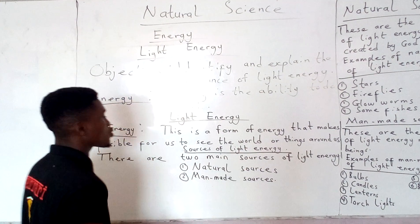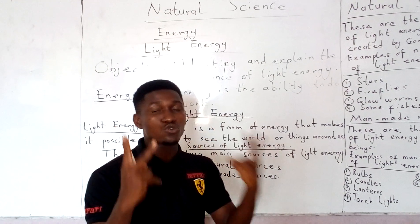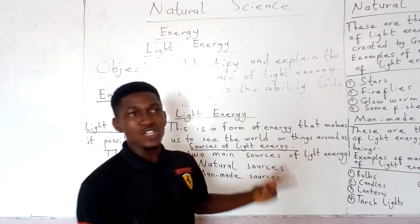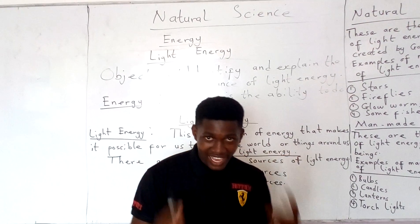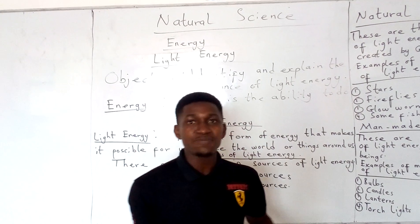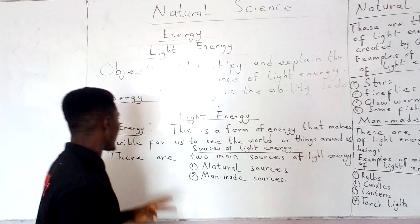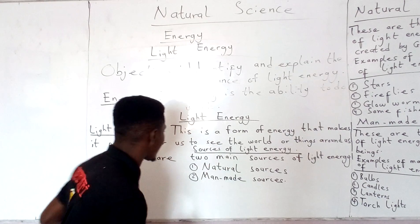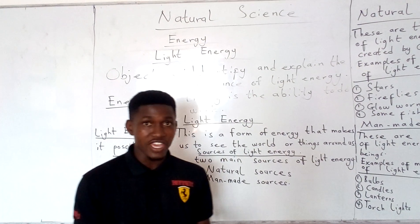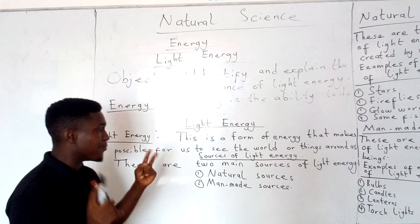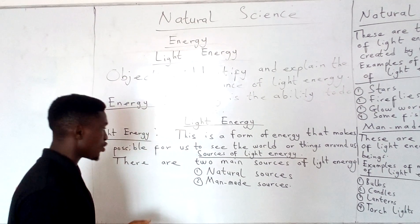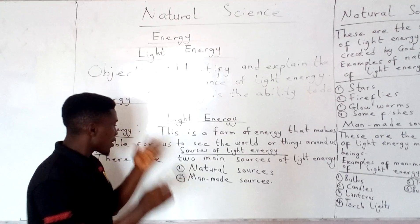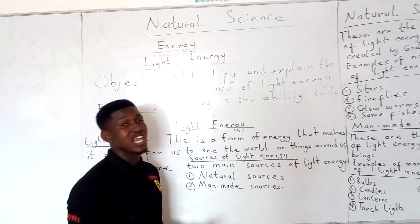There are two main sources of light energy — ways by which we can get light energy. The first one is the natural sources, and the second one is the man-made sources, also called artificial sources.